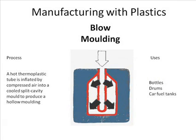Blow moulding: a hot thermoplastic tube is inflated by compressed air into a split cavity mould to produce a hollow moulding. Examples of this are bottles, drums and car petrol tanks.